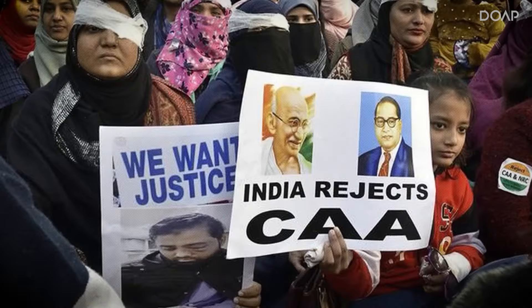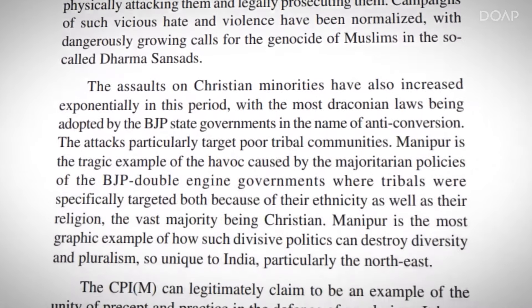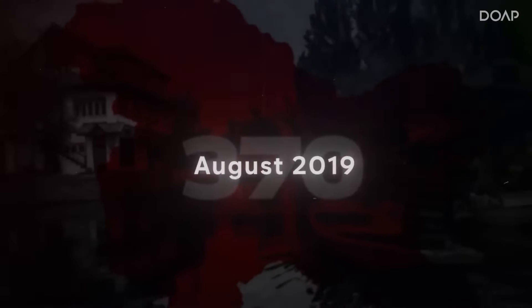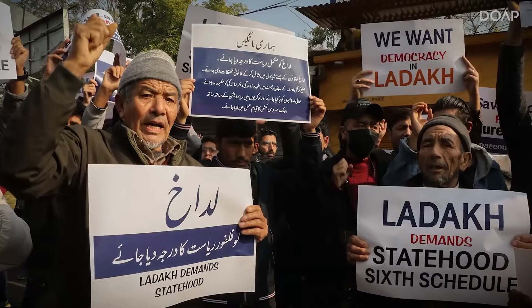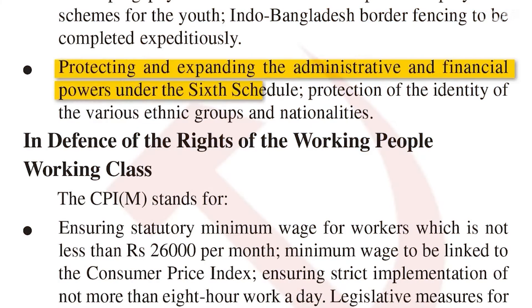The first important category is controversial policies. There were a lot of controversial policies a few months ago, such as CAA — the Citizenship Amendment Act — and UCC, which focuses on having one personal law for the entire nation. CPIM clearly says they're against both these laws. Even Article 370, which was recently abolished, CPIM promises to bring it back after they win elections. Similarly, regarding Ladakh's inclusion in the Sixth Schedule, CPIM guarantees that for them as well.